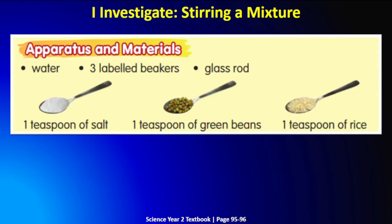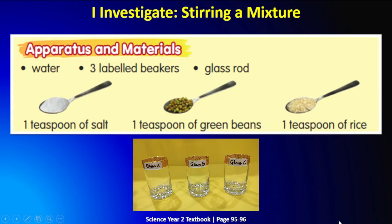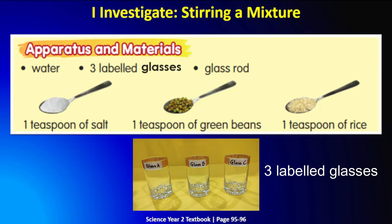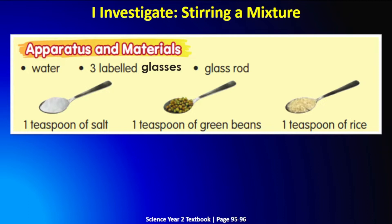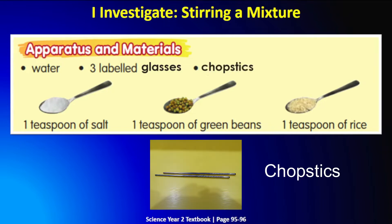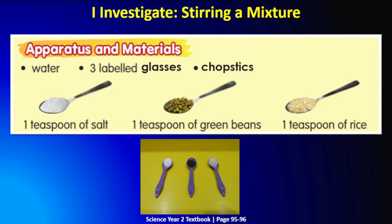I hope you still remember this. Now, the apparatus and materials we need for this investigation are: water, three beakers — but since I don't have beakers at home, I've changed them to three ordinary drinking glasses. Next, a glass rod — I also changed this to chopsticks since I don't have a glass rod at home. We also need one teaspoon of salt, one teaspoon of green beans, and one teaspoon of rice.